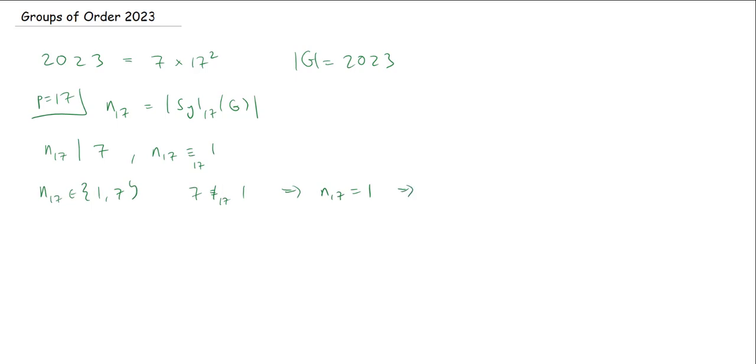So this implies that N_17 is equal to 1. So there is a unique Sylow 17 subgroup. So this implies there exists a unique Sylow 17 subgroup, a unique subgroup of order 17 squared. And maybe we'll give a name to it. Let's call this Q.